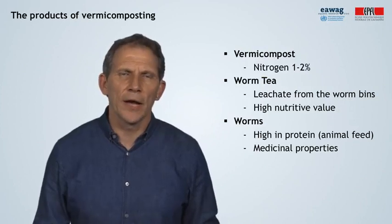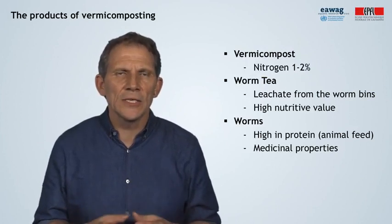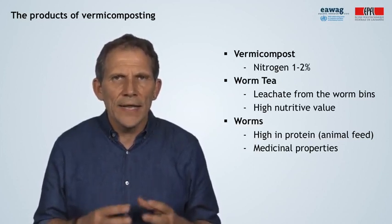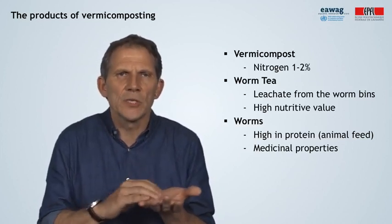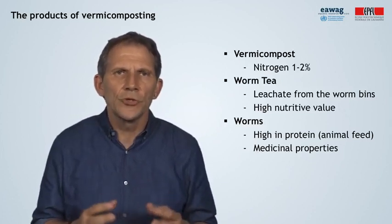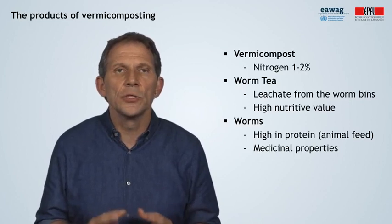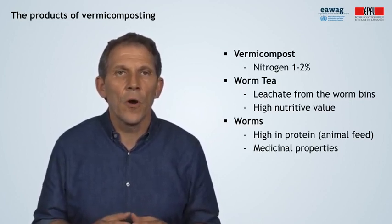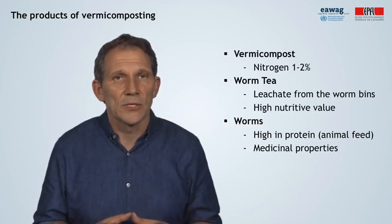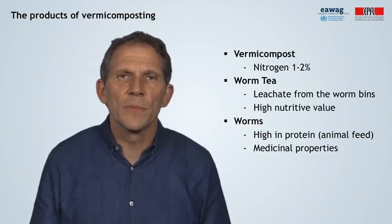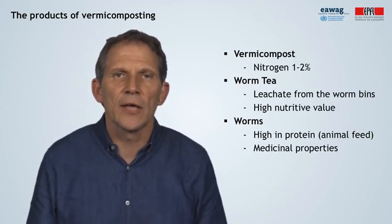Now let's look at the products from vermicomposting. As the feed passes through the earthworm gut, the material is mineralized and plant nutrients are made available. The grinding effect of the gut leads to the formation of small granules — quite typical when you take vermicompost into your hands. Nitrogen content of vermicompost is typically higher than compost, around 1 to 2%, and the nutrients are easily available to plants. Furthermore, enzymes and microorganisms from the gut are very beneficial for soil and plants, even suppressing diseases. Leachate from the worm bins can also be used as a liquid fertilizer — in small-scale systems this is called worm tea.